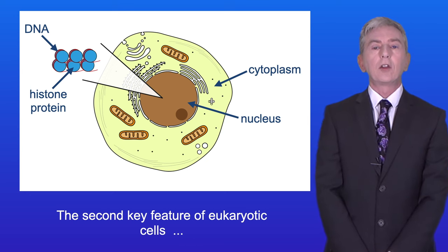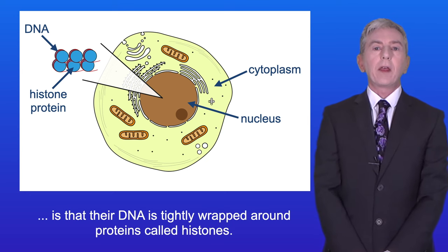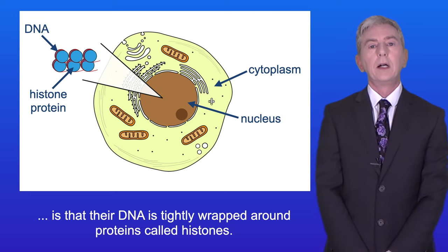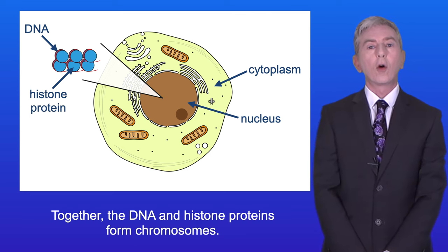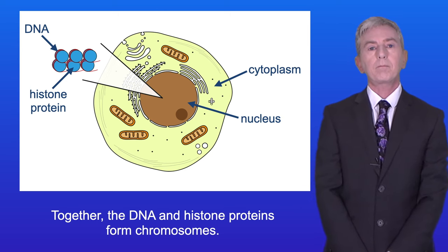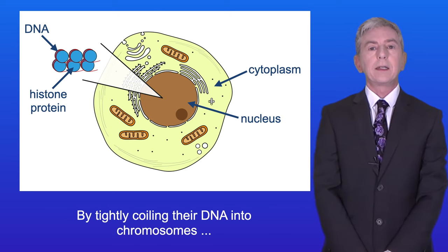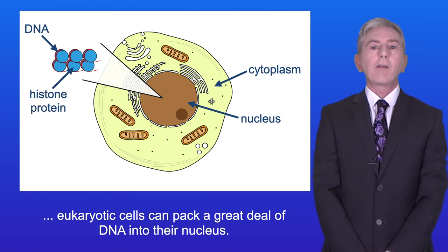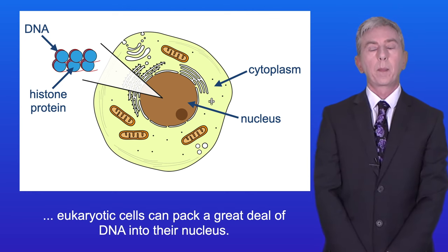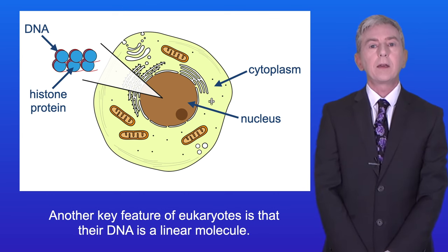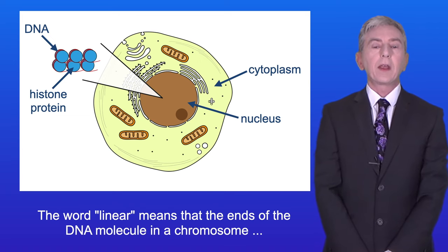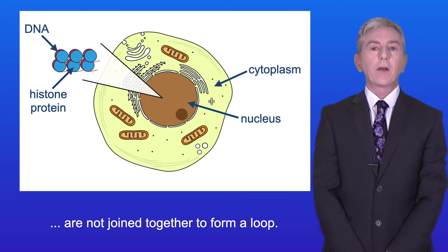The second key feature of eukaryotic cells is that their DNA is tightly wrapped around proteins called histones, and together the DNA and histone proteins form chromosomes. By tightly coiling their DNA into chromosomes, eukaryotic cells can pack a great deal of DNA into their nucleus. Another key feature of eukaryotes is that their DNA is a linear molecule, meaning the ends of the DNA molecule in a chromosome are not joined together to form a loop.